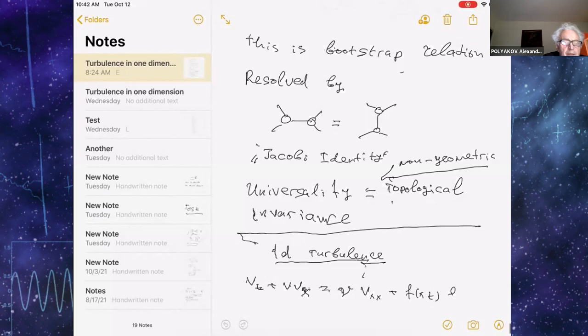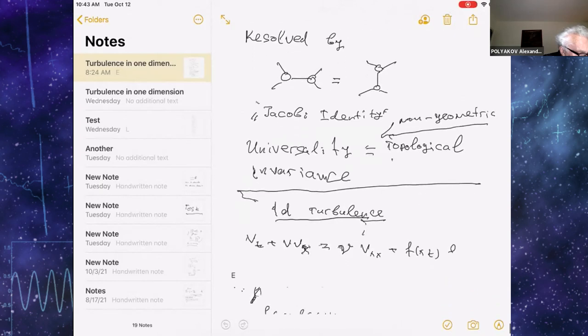So basically, just before I move further, just to mention that bootstrap relations can be expressed as kind of Jacobi identity for critical fluctuations. Jacobi identity is the basic relation in Lie groups, and so I see some analogy here.